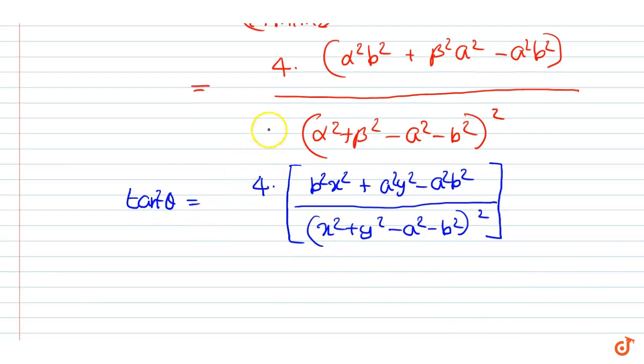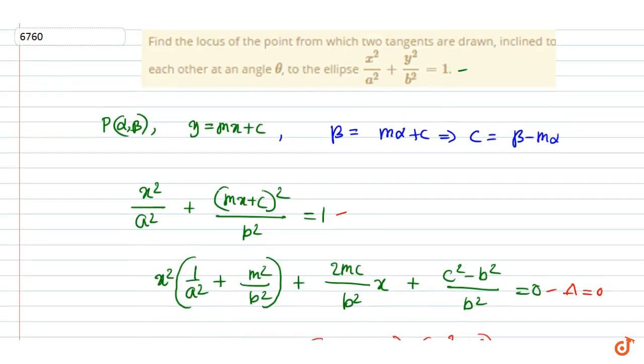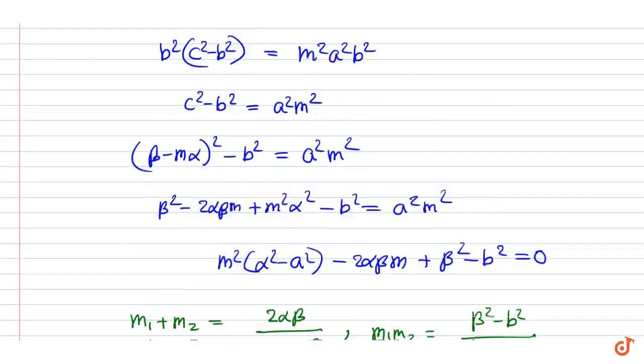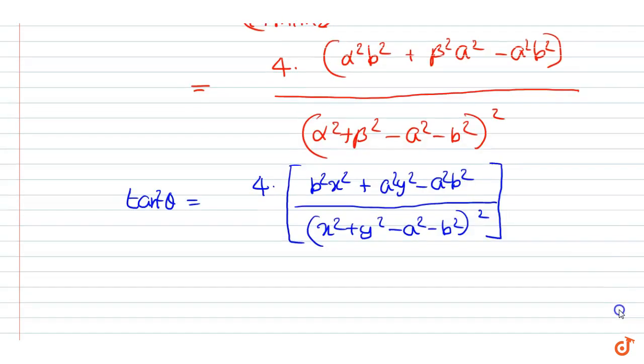This is the equation of the locus of the point from which tangents inclined at angle θ to each other are drawn to the ellipse.